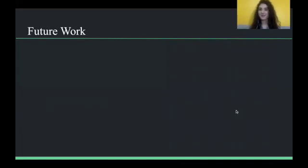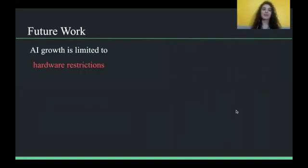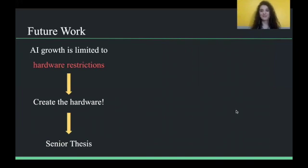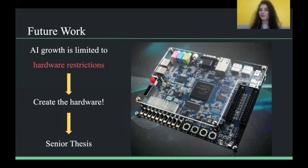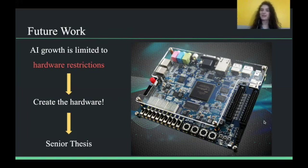Future work. Where does this go next? So, we mentioned in the beginning that our AI growth right now is very limited to the hardware restrictions. So, naturally, the next thing to do would be to use this model and create the hardware, which just happens to be my senior thesis. So, I am taking the model that we're using, and we've tested, and I'm using an FPGA, or a field programmable gate array, to design the hardware for it. This is more or less just fancy hardware where you can make it do whatever you want it to do. So, that is my senior thesis, and I'm working on that right now, and it's been a fun journey so far, and hopefully I'll be finishing that up at the end of this year.